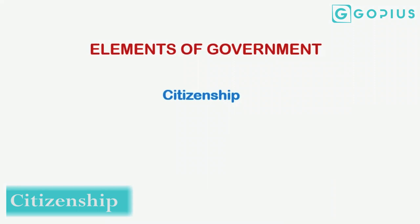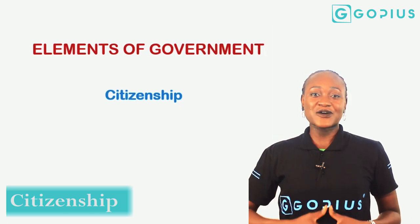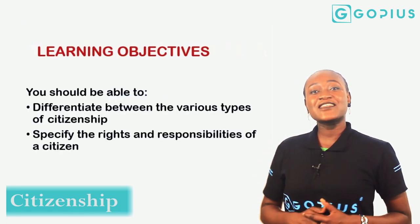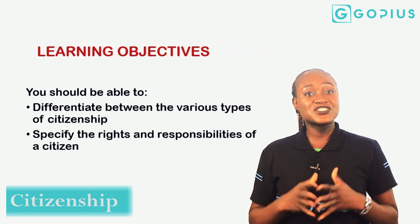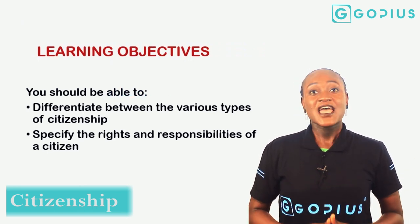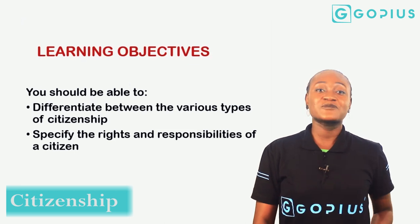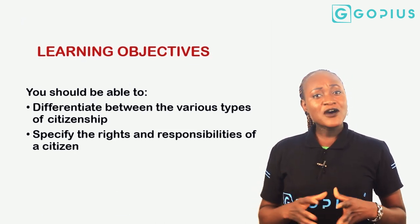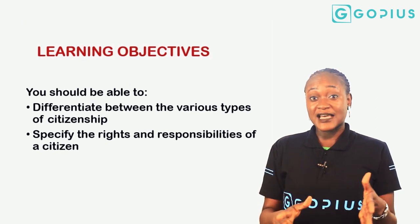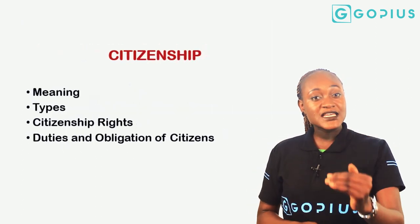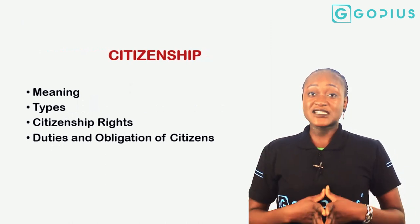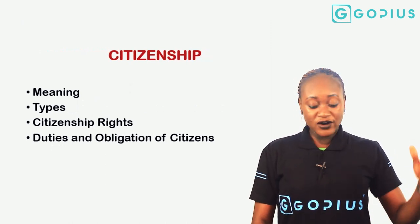Hi guys, it's so good to have you in this series of our government tutorials. We are going to be looking at citizenship — what is citizenship, so many things about citizens, and how it works in our society. At the end of this lesson you should be able to differentiate between the various types of citizenship and to specify the rights and responsibilities of a citizen. We're going to be looking at the meaning, the types, the rights of a citizen, as well as the duties or obligations of a citizen.